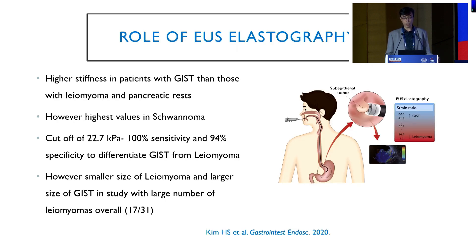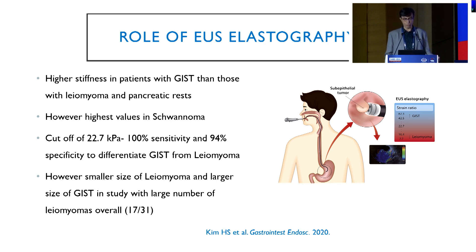EUS elastography also helps to differentiate GIST from other tumors. GIST has higher stiffness. A study showed that a cutoff of 22.7 kilopascals is more than 100% sensitive and 95% specific to differentiate GIST from leiomyoma.